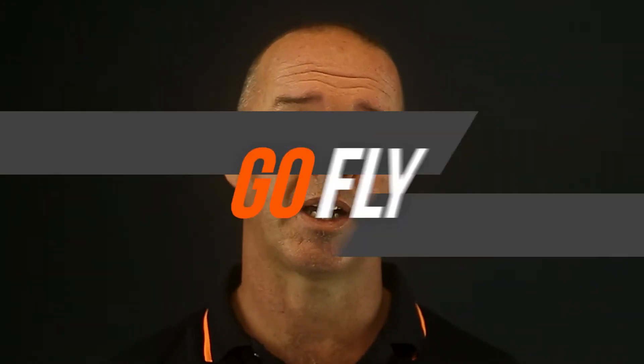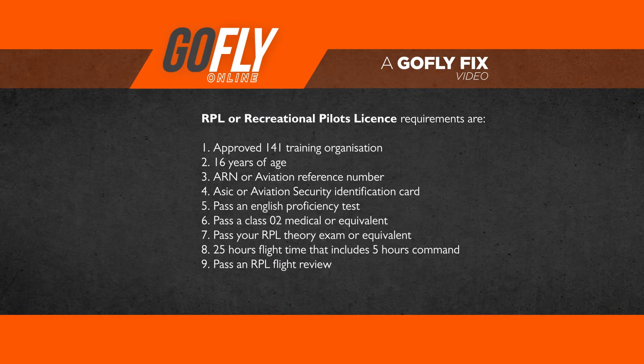If you're conducting all of your training at a Part 141 school for a Recreational Pilots License, you must be at least 16 years of age, have an ASIC card, an ARN or Aviation Reference Number, and to be eligible for the flight test you need to have passed an English proficiency test, have at least 25 hours of flight time including five hours in command, pass an RPL theory examination, pass a class two medical, and obviously pass the flight test.